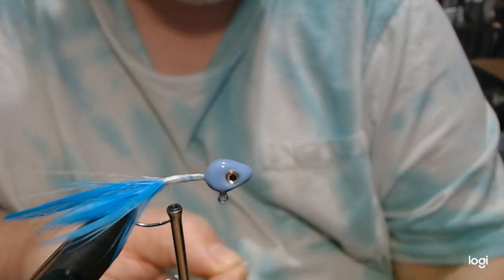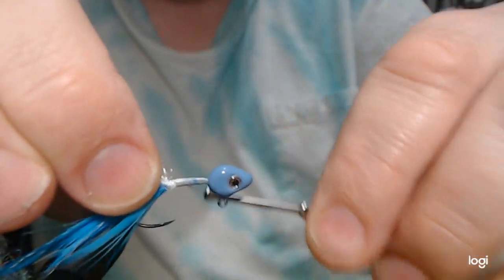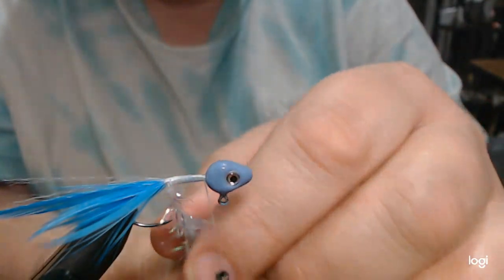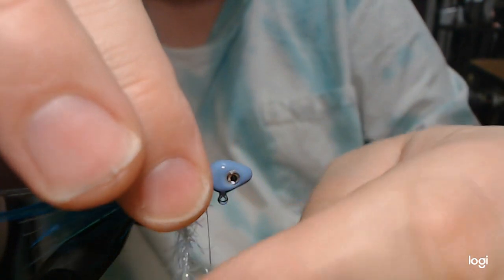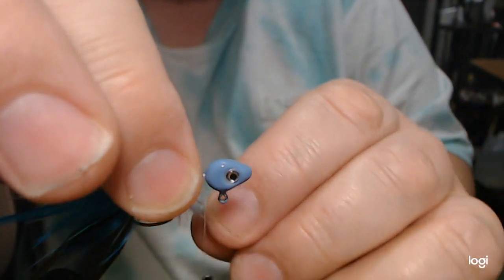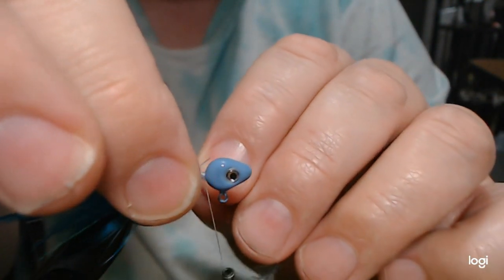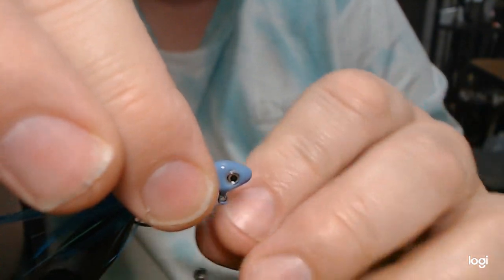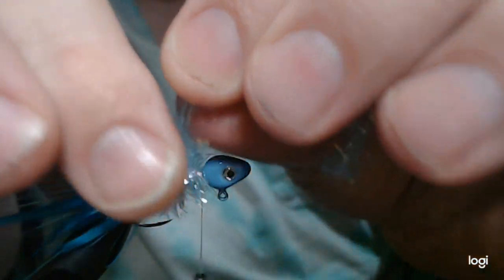I'm going to get some of the little barbs off of our chenille here for our tie-in point, and we're going to start wrapping. Now this cactus chenille, you want to preen back these little fibers just like you would if you were tying a feather in, any kind of hackle material like that where you want to preen it back. You do the same thing with this cactus chenille.